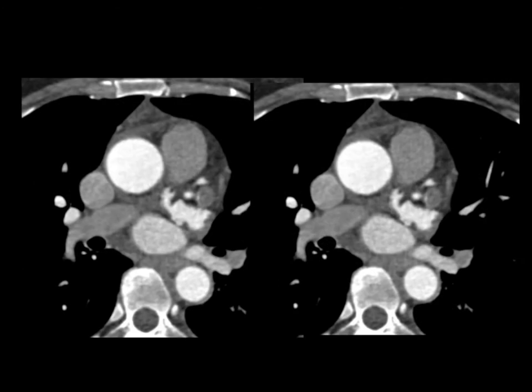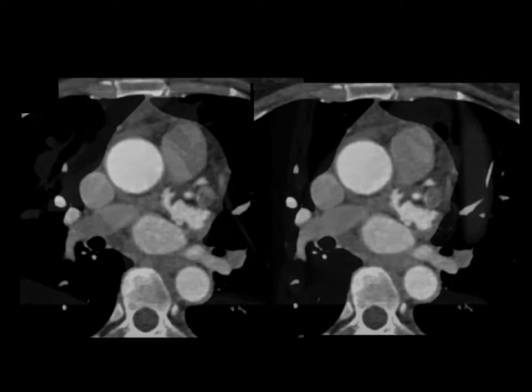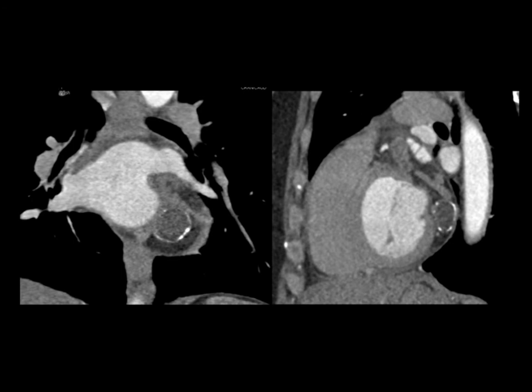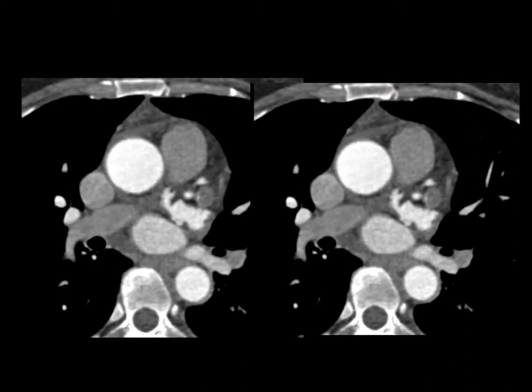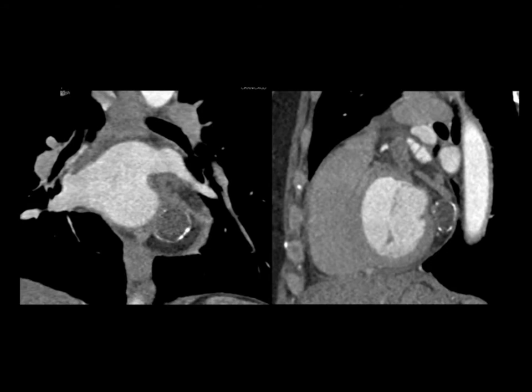Looking more carefully, there's a second circular structure about a centimeter in size right past the patient's circumflex. Moving from those images to the next set, it has rim-like calcification and is circular. What is this? What's the key finding beyond that coronary? It's not a fistula like the last case, it's not an anomalous coronary, and it's not stenosis per se. Yes, the patient does have occlusion of the circumflex — but the answer is a coronary artery aneurysm. Looking back at the same case, you can clearly see a circular structure with calcification. That's a coronary artery aneurysm.